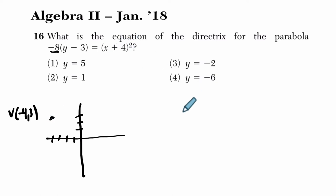Alright, and the general structure of an equation is for any vertical vertex, 4p times y minus k equals x minus h squared. So the vertex is h k, which is how we got here.